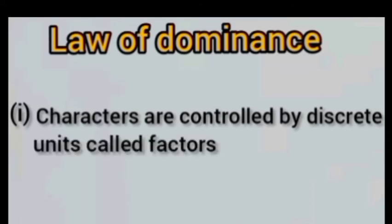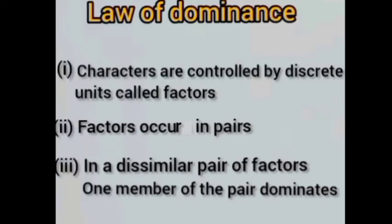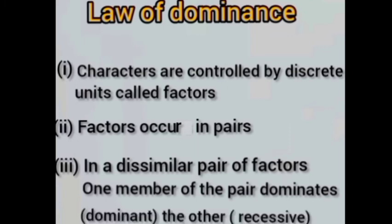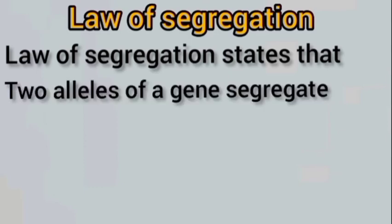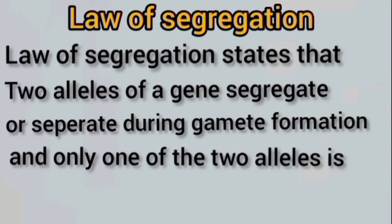Based on his experiments in monohybrid crosses, Mendel explained two laws. The first is the Law of Dominance and the second is the Law of Segregation. According to the Law of Dominance, characters are controlled by discrete units called factors, which occur in pairs. In a dissimilar pair, one member dominates the other. The character expressing in the F1 generation is called dominant, and the character not able to express is called recessive.